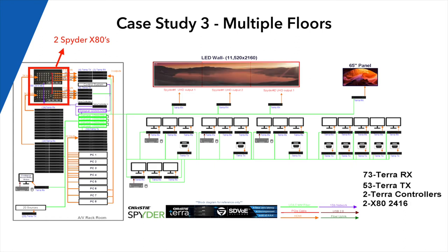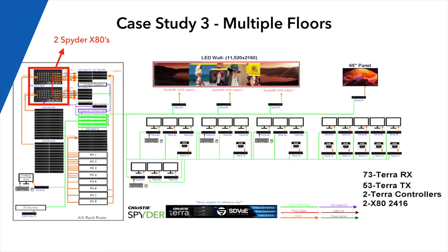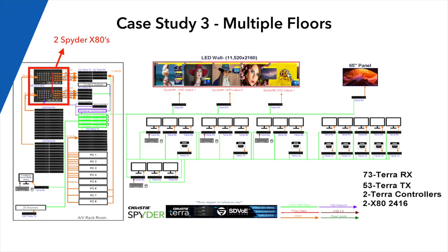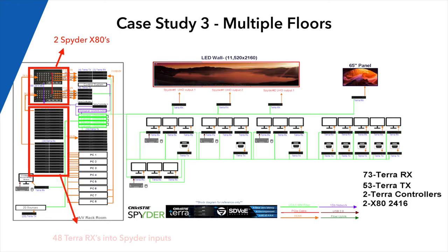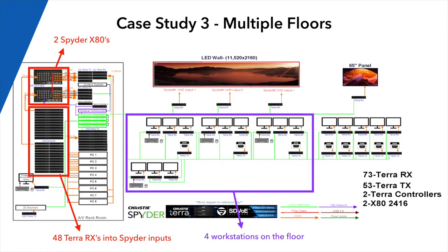Case study number three is an LED wall with two Spiders and Terra. They can play content and move it anywhere on that LED wall. Forty-eight Terra receivers sit upstream of two Spiders — that's 48 channels of video they wanted to see on the video wall simultaneously, achieved with Terra upstream and downstream of the Spider. There are four workstations on the floor and a collaboration space to the side with tabletop inserts, allowing users to ingest video into the Terra matrix and route it anywhere on that video wall.